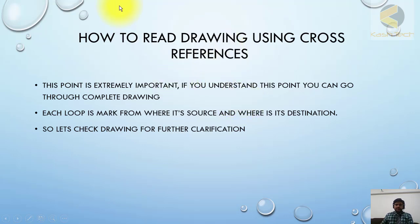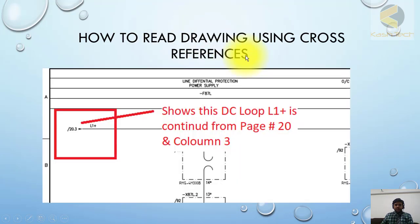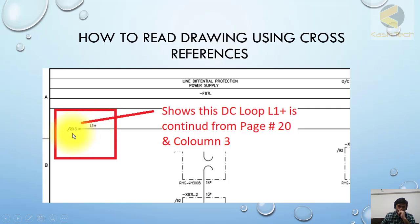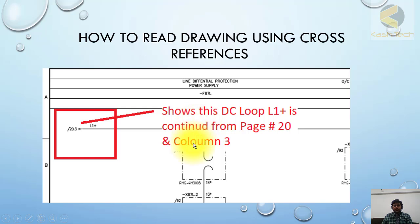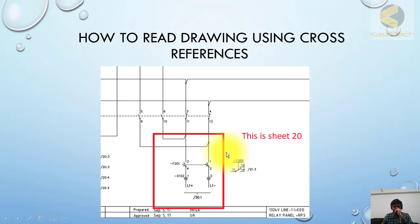Let's check the drawing. Here you can see L1+ is the DC loop. This DC loop is coming from sheet number 20, column number 3. You can go to the next sheet and find that this loop is terminating to the current sheet. Now I've opened sheet number 20.